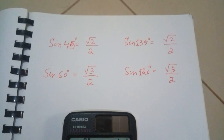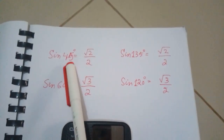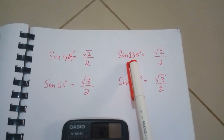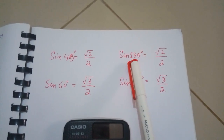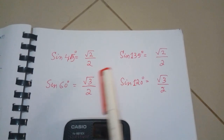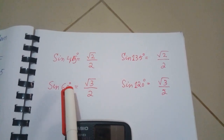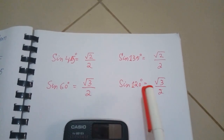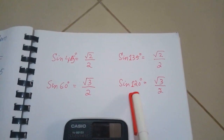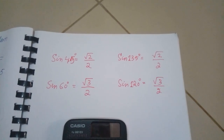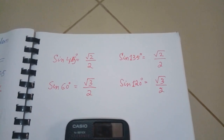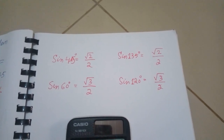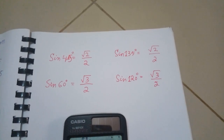So you can see that when sin 45, which is an acute angle, gives √2/2, and sin 135, which is an obtuse angle, gives the same answer √2/2. Similarly, sin 60 gives √3/2 and sin 120 gives the same answer. We get the same answer on the calculator when using the sine function on one acute angle and one obtuse angle.